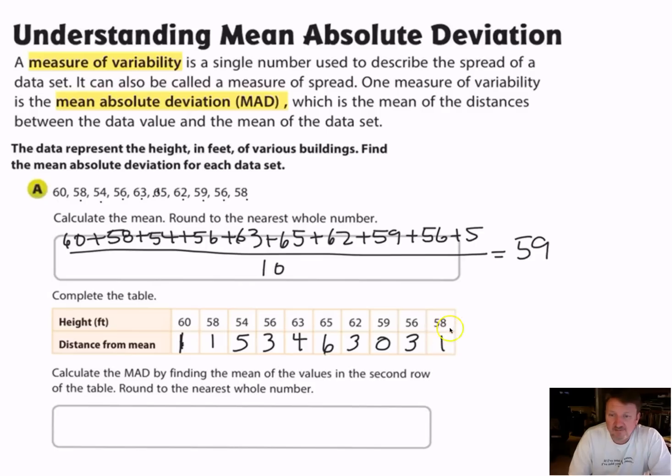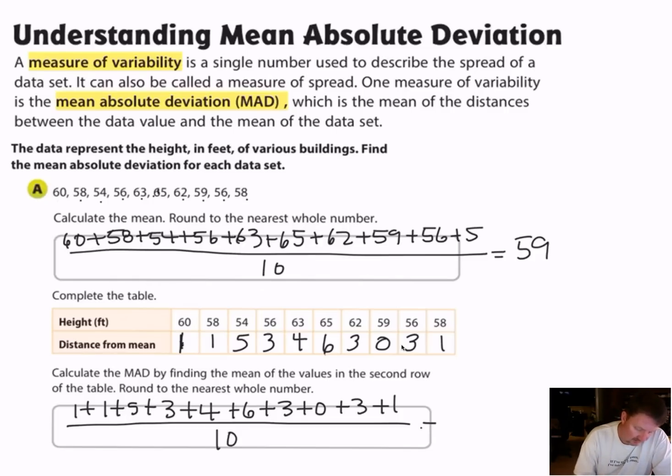So it doesn't matter which way it is. 58 is less than 59, but it's only one away from 59. 62 is more than 59, but it's three away. We're talking about distance here, so they're all positive. So now I want to take all these numbers that I have and I want to add them together and divide by how many I have, and that's going to give me my mean absolute deviation. So I know I'm going to divide by ten, and that's going to give me a mean absolute deviation of three.